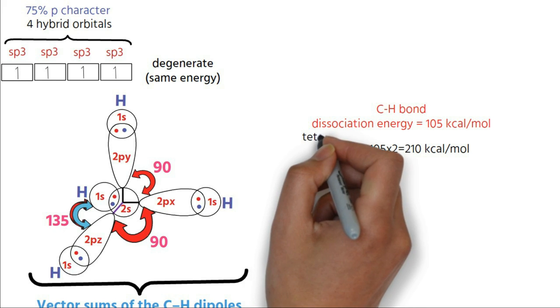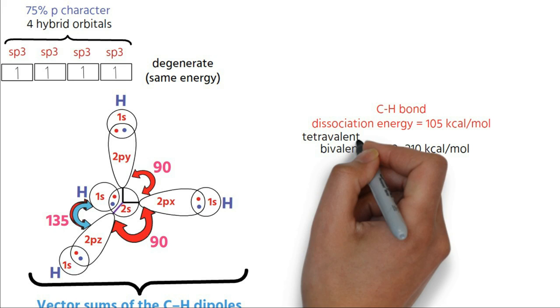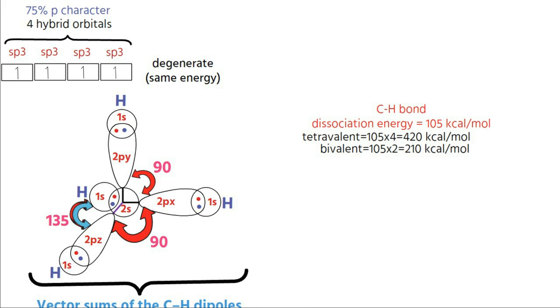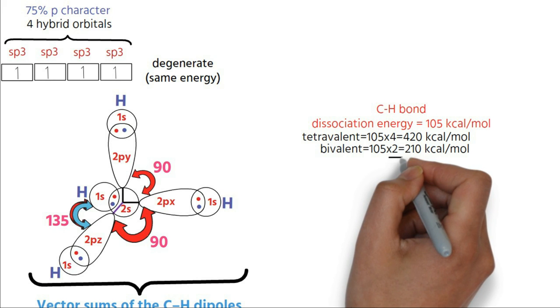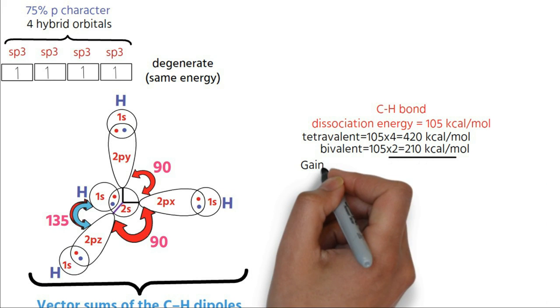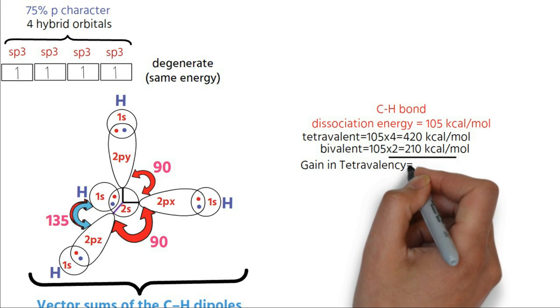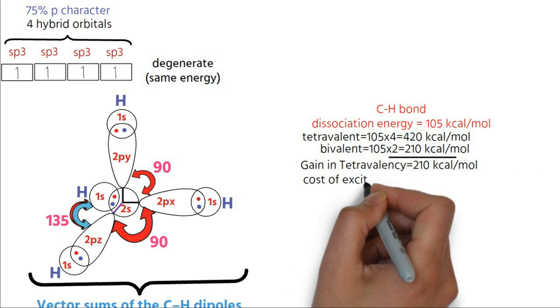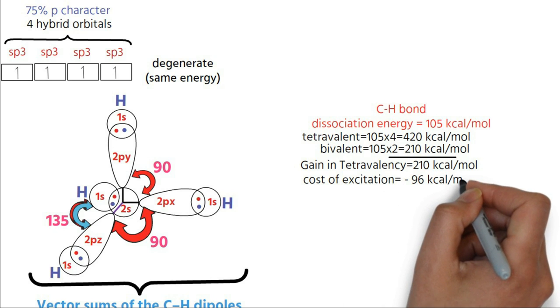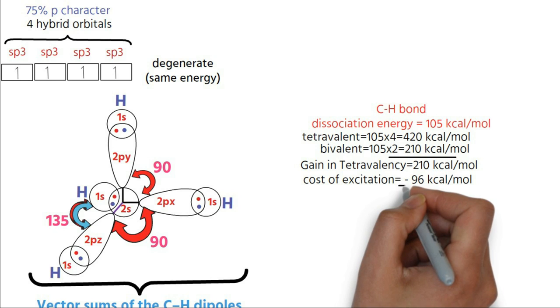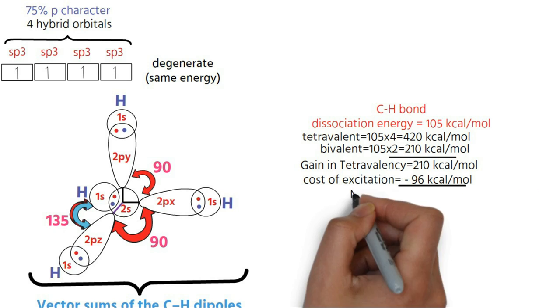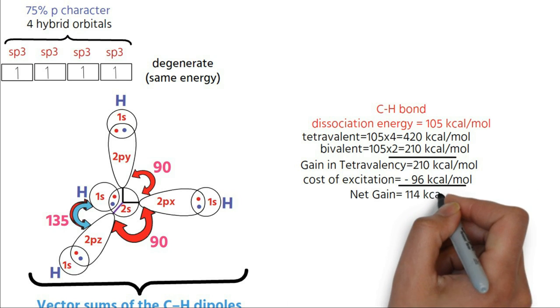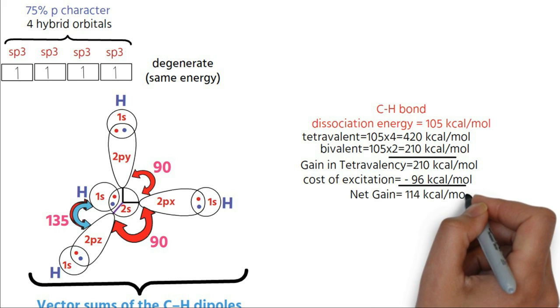After excitation, formation of four CH bonds releases 420 kilocalories per mole of energy. The gain in tetravalency is 210 kilocalories per mole. Cost of excitation is 96 kilocalories per mole. The overall advantage of exciting an electron is 114 kilocalories per mole, making it a feasible process to happen.